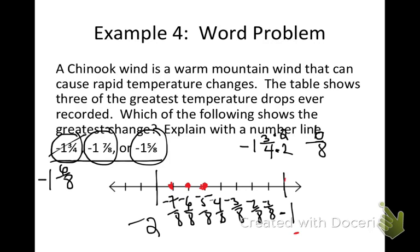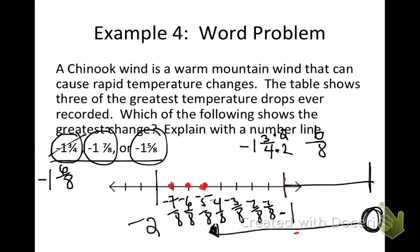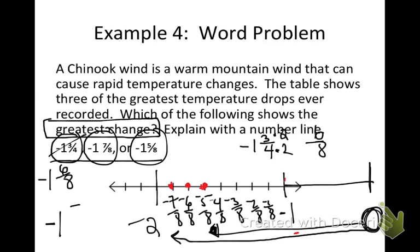Let's reevaluate. If I want the greatest change in temperature, I want to see which is the greatest distance from zero — not just the greatest number. Negative 5 eighths is the greatest number, but it is not the greatest change. The greatest change is negative 1 and 7 eighths, because it is farthest from zero. Read your questions carefully: greatest number and greatest change are not the same thing.